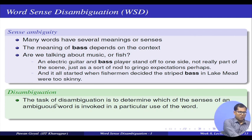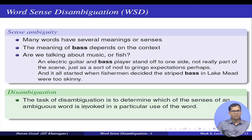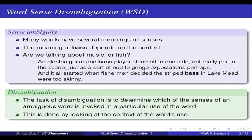The field of word sense disambiguation deals with the problem of finding the sense of a word depending on the context. How can we do that computationally? We can define the task of disambiguation as determining which of the senses of an ambiguous word is invoked in a particular use of that word. We do this only for ambiguous words — when a word has more than one sense — and we deal with it by looking at the context of the words used.